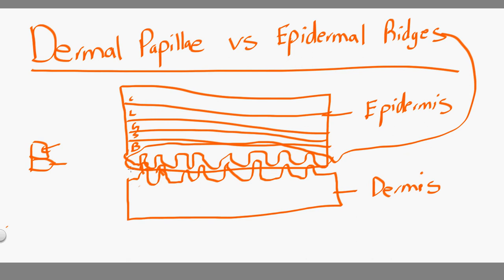And that is part of the dermal papillae. The dermal papillae here are the egg crates in the dermis. So what's the difference between the dermal papillae and the epidermal ridges? Epidermal ridges are in the epidermis, and dermal papillae are in the dermis.